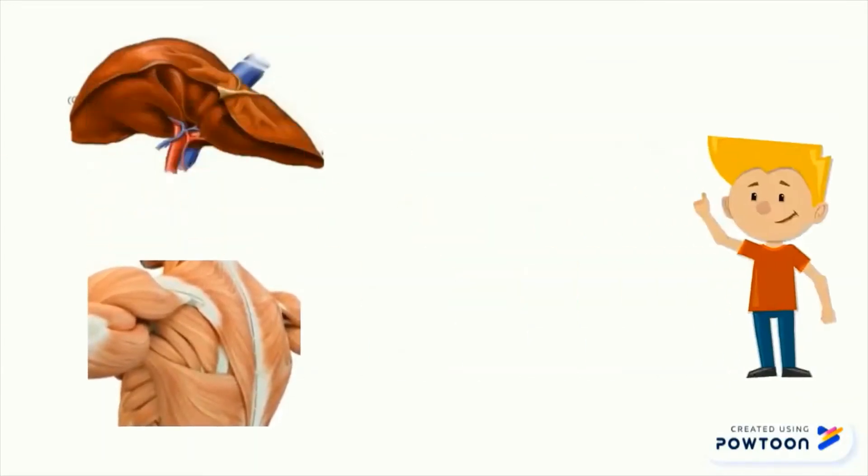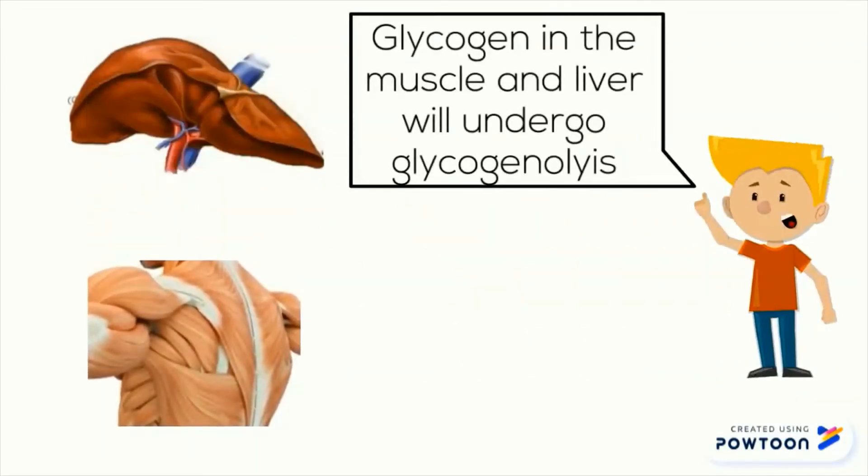Glycogen in liver and muscle cells will undergo glycogenolysis which results in the release of glucose. Glucose released by the liver will be used up by other cells while glucose released by muscle cells will be used to provide energy for muscle contraction.